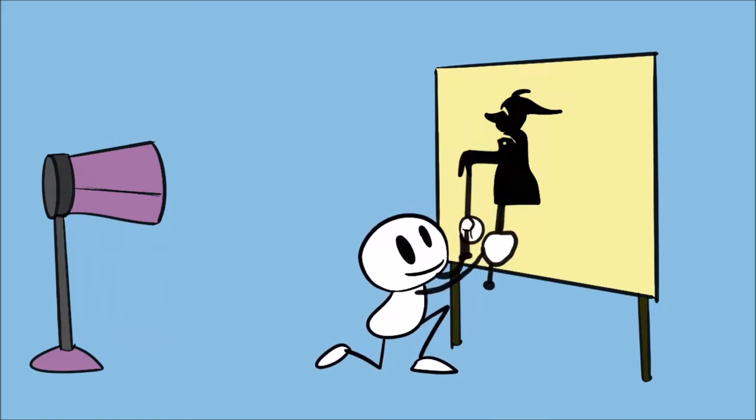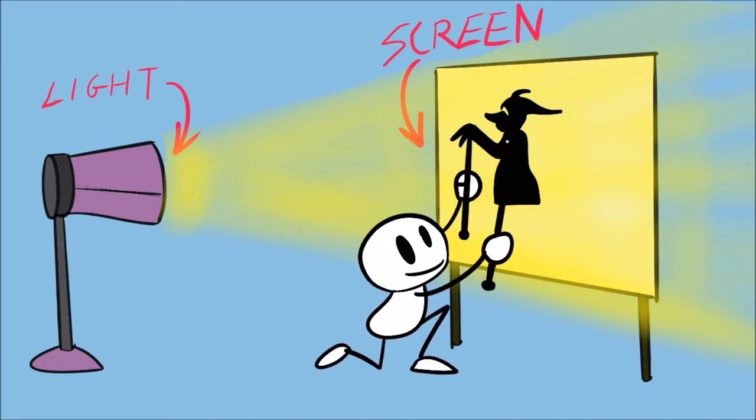Historically they would use an oil lamp in Bali but nowadays most people use electric lights. The light will shine through all the little holes that are cut into the puppet and project a beautiful silhouette of a character on the other side. Depending on how thin the cotton screen is the audience may see the colors that are painted into the puppet as well.